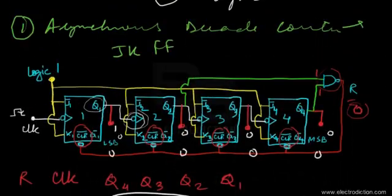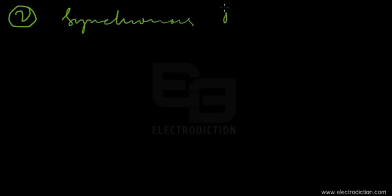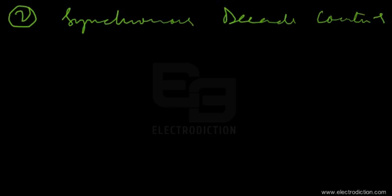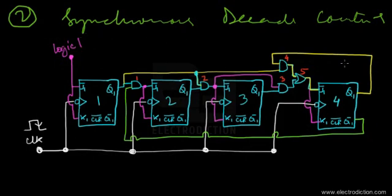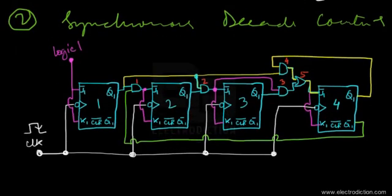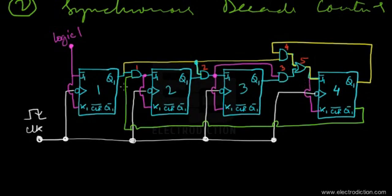That completes the timing diagram for the asynchronous decade counter. Now moving on to the synchronous decade counter — looking at this circuit, similar to the asynchronous version, we utilize four JK flip-flops that are negative edge triggered. Looking at the counting pattern in the state table, we have the clock input and outputs Q4, Q3, Q2, and Q1.